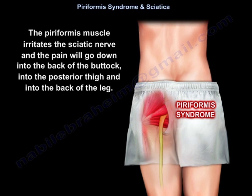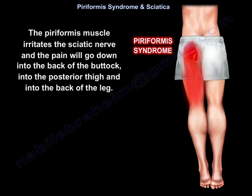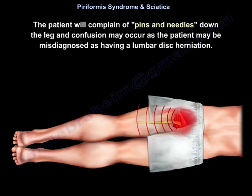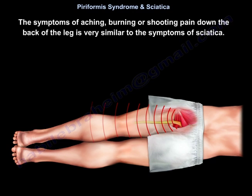The piriformis irritates the sciatic nerve, and the pain will go down in the back of the buttock, the posterior thigh, and to the back of the leg. The patient will complain of pins and needles down the leg, and confusion may occur as the patient may be misdiagnosed as having lumbar disc herniation. The symptoms of aching, burning, and shooting pain down the back of the leg are very similar to the symptoms of sciatica.